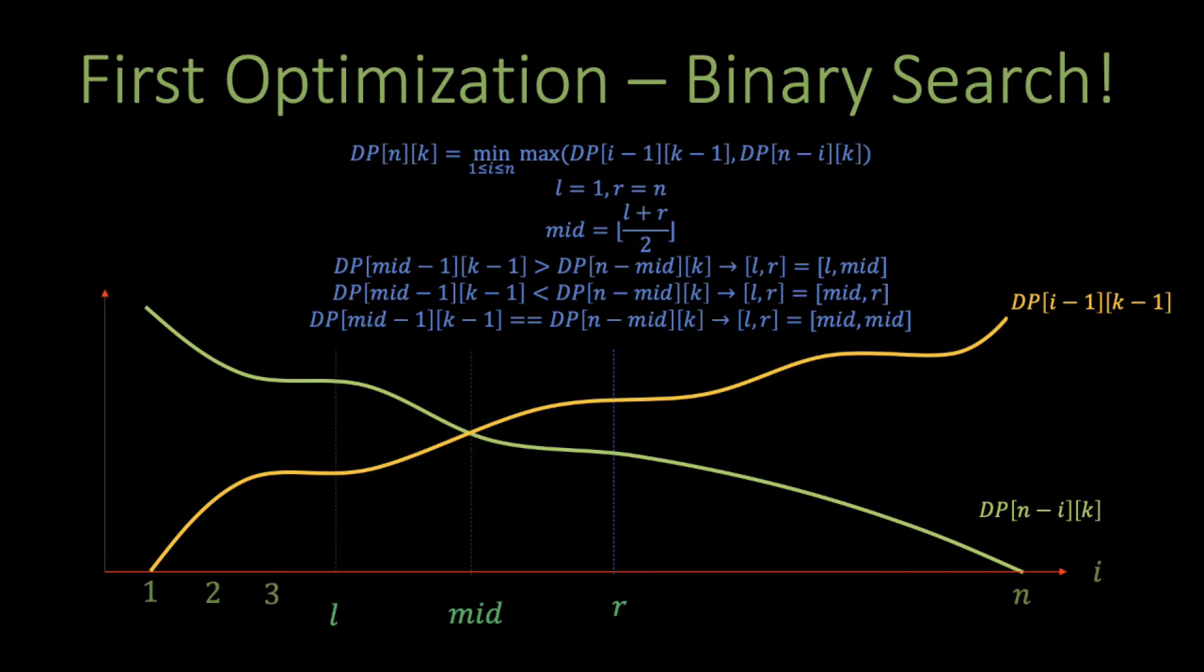Now, notice that in every step, the search interval we have halves in length. So we start with an interval of length n, then n/2, then n/4, then n/8, and so on. So after log n iterations, our interval would roughly be of constant size, or O(1). So this step takes O(log n) to finish this search.